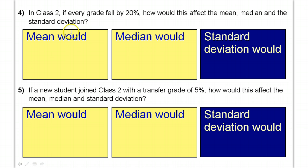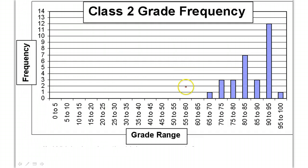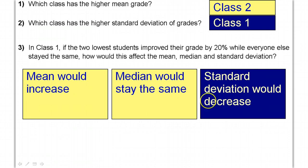In class 2, if every grade fell by 20%, how would this affect the mean, median, and standard deviation? Every single grade in class 2 dropped by 20% — that's four of these little marks. Let's start with the mean. The class agrees that the mean would decrease. That's a no-brainer — if everything drops, the middle is going to drop. The mean is definitely going to drop.